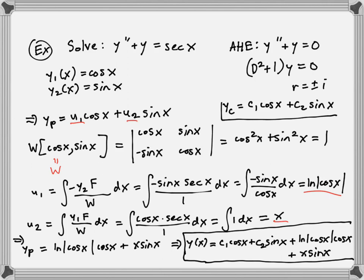The general solution is Y(x) = C1·cos(x) + C2·sin(x) + ln|cos(x)|·cos(x) + x·sin(x). Here the first two terms are YC and the last two terms are YP. That one was fairly simple since the integrals were easy.